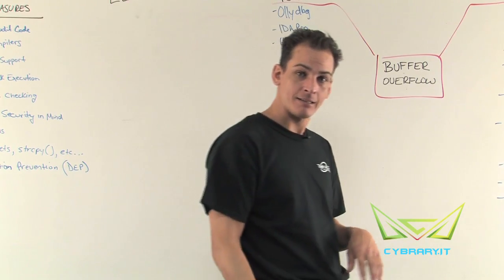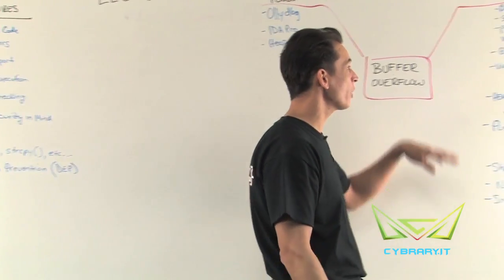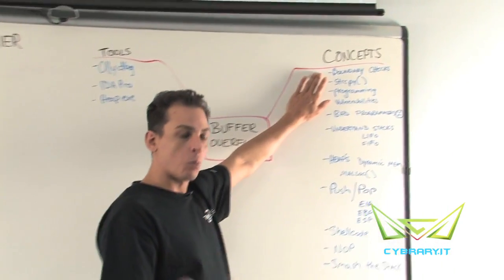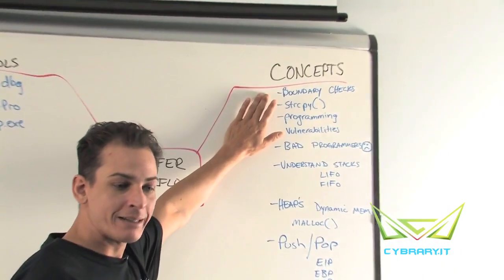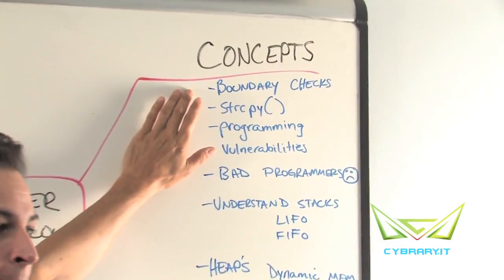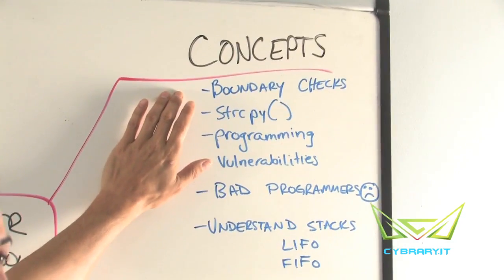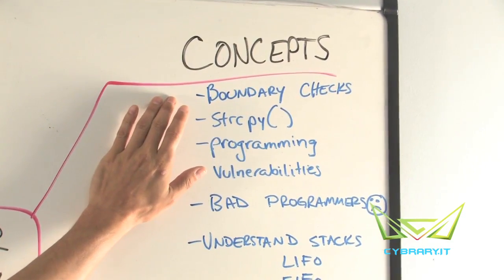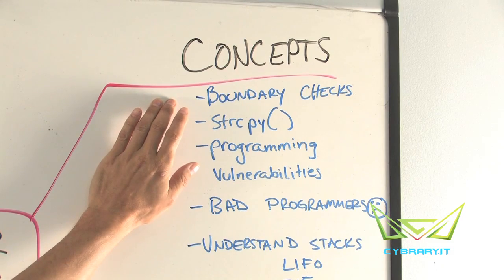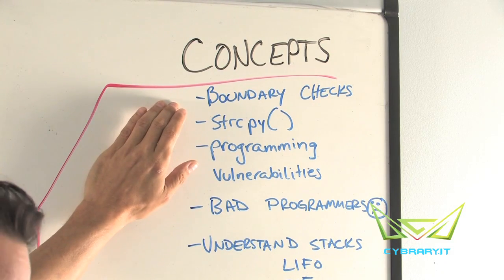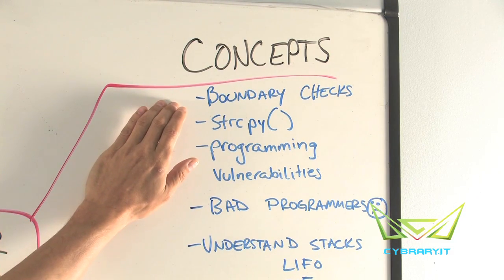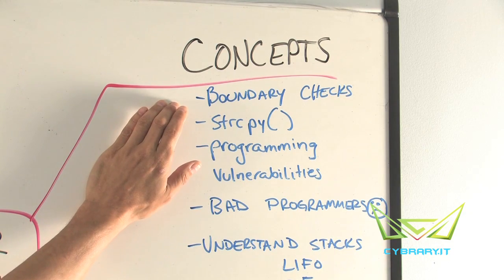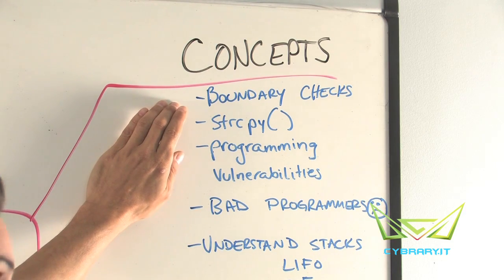Let's take a closer look at some basic concepts of buffer overflow. We just talked about the analogy of the ice cube tray. What you can do is put a boundary check on what gets stored in memory, and if you actually set the boundaries well, then you decrease the likelihood of actually overflowing into another section of memory.